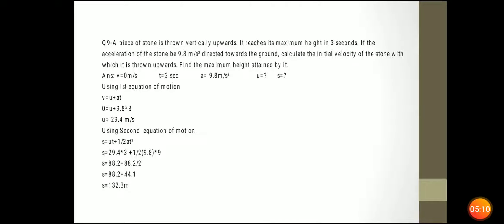A piece of stone is thrown vertically upwards from ground to top. The final velocity is zero because after reaching maximum height its speed will be zero, so v = 0. It reaches its maximum height in 3 seconds, and the acceleration is 9.8 m/s² towards the ground. Calculate the initial velocity u using the first equation of motion, and calculate the height using the second equation of motion: s = ut + ½at².